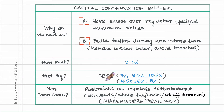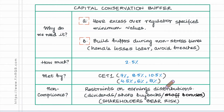What happens if a bank is found to be non-compliant with respect to the capital conservation buffer requirement? What will happen is that earnings distributions — your discretionary distributions of earnings — will be restrained.